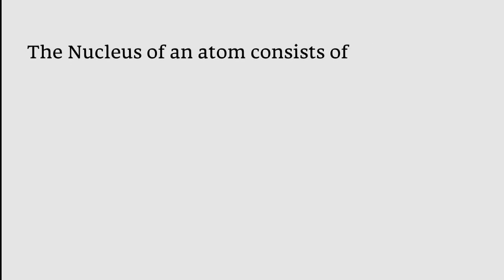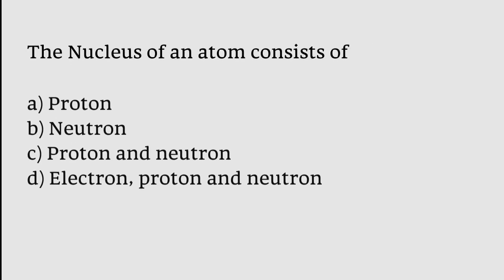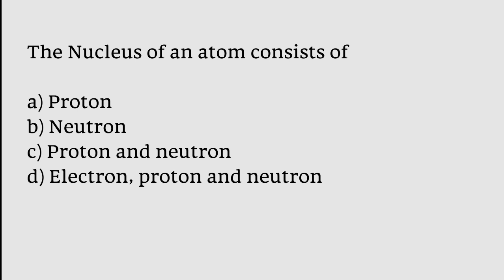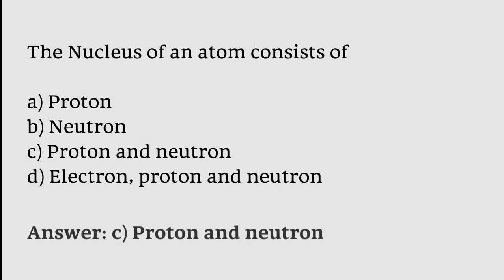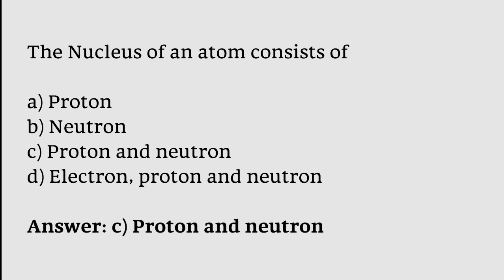The nucleus of an atom consists of: proton, neutron, proton and neutron, electron. The correct answer is option C. The nucleus of an atom consists of protons and neutrons.